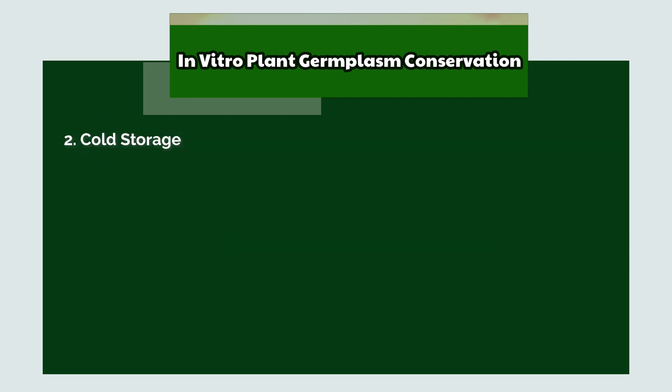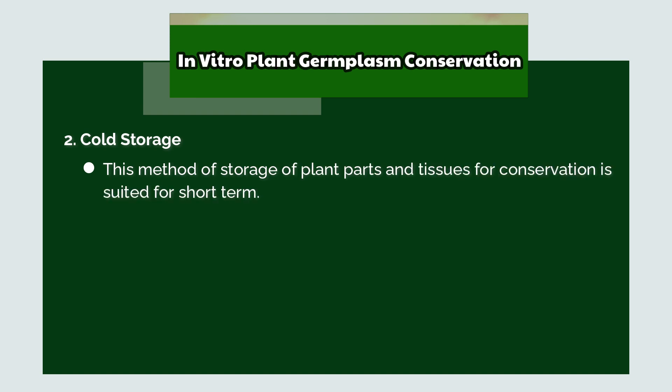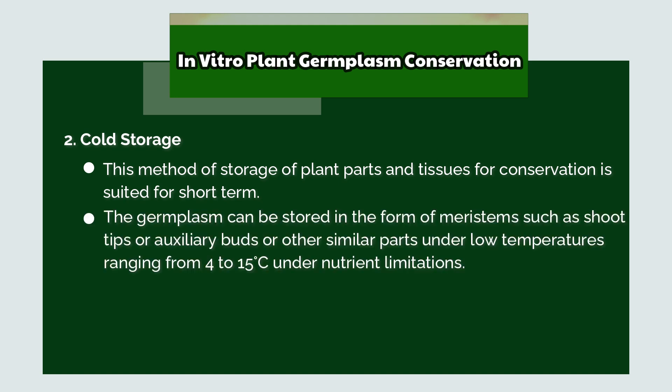Cold storage: This method of storage of plant tissues and parts for conservation is suited for the short term. The germplasm can be stored in the form of meristems such as shoot tips, auxiliary buds, or other similar parts under low temperatures ranging from 4 to 15 degrees Celsius under nutrient limitations.